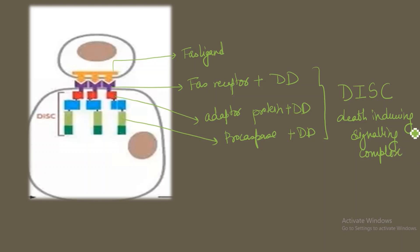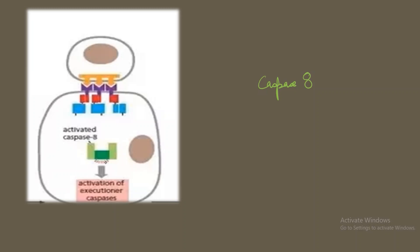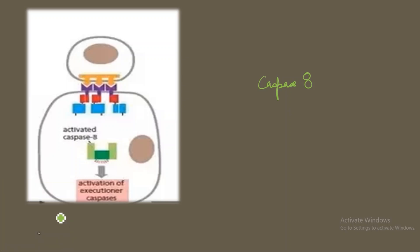The function of the DISC is that the assembly of multiple procaspase 8 molecules causes them to come close to each other, resulting in the autocleavage of each other, which leads to their activation. They are converted into the active form, caspase 8. This activated caspase 8, which is an initiator caspase, then causes the activation of the executioner caspase — caspase 3 — which causes the death of the cell.